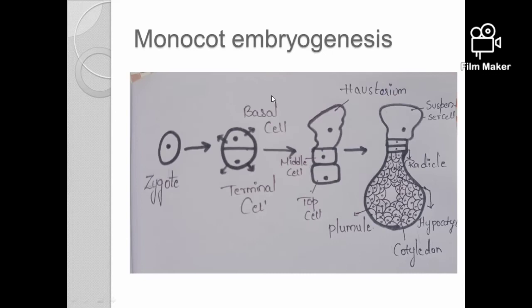Next is monocot embryogenesis. Monocot embryogenesis is similar to dicot embryogenesis. Embryogenesis is similar in dicots and monocots only in the earlier stages; it is different in the later stages.